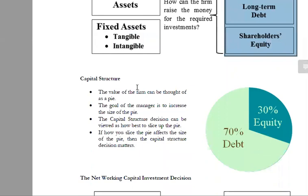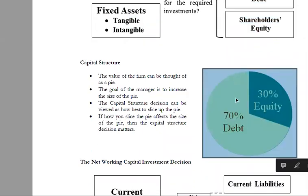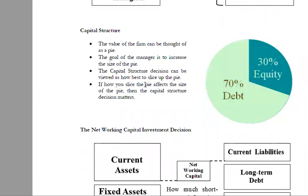What is the capital structure? The capital structure consists of debt and equity. This can be thought of basically as a pie.